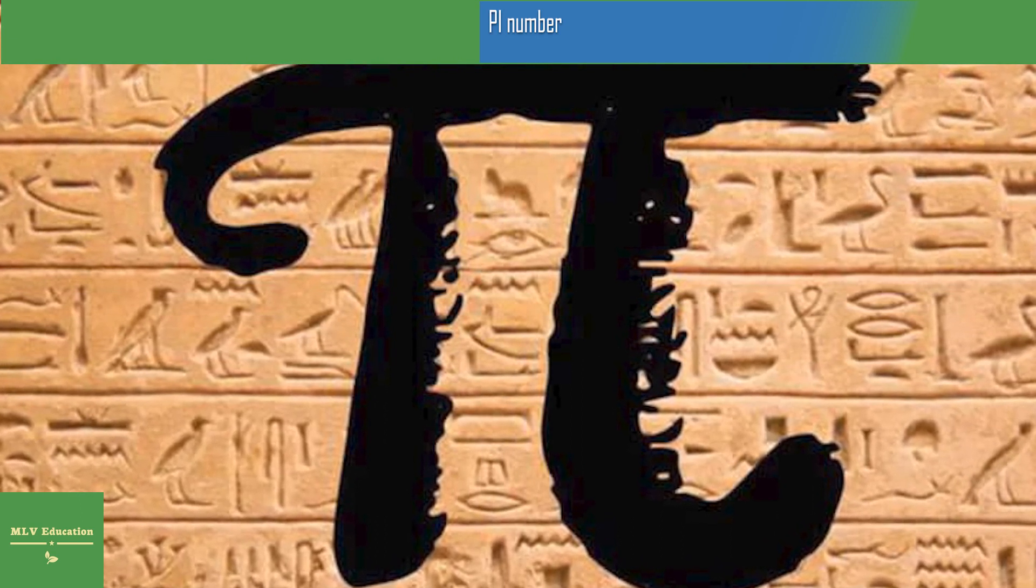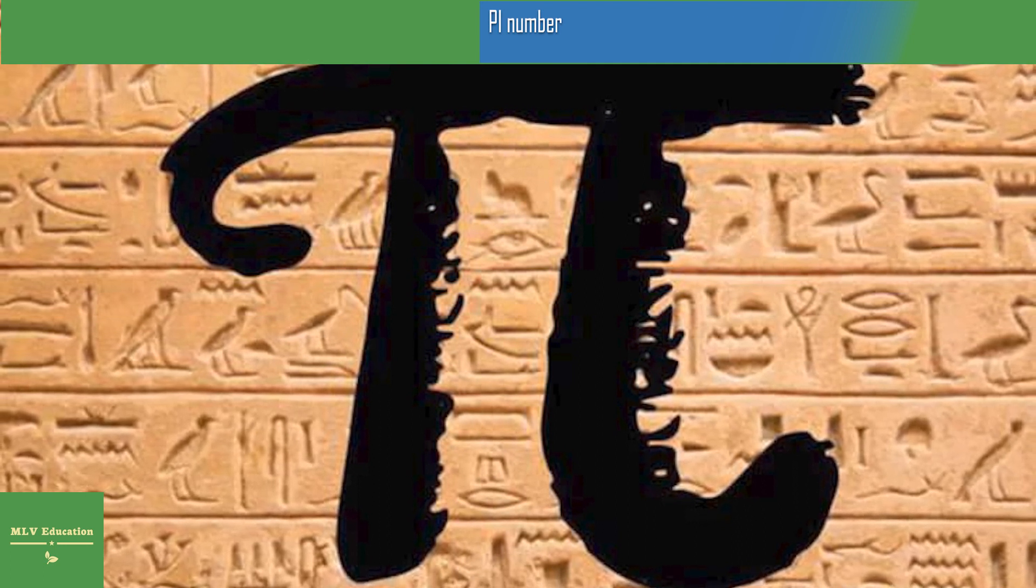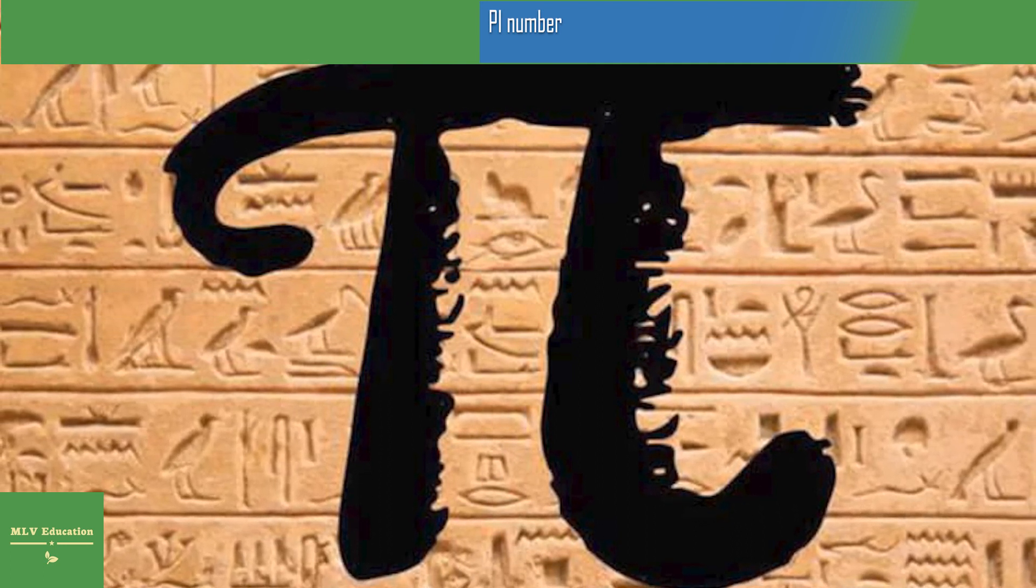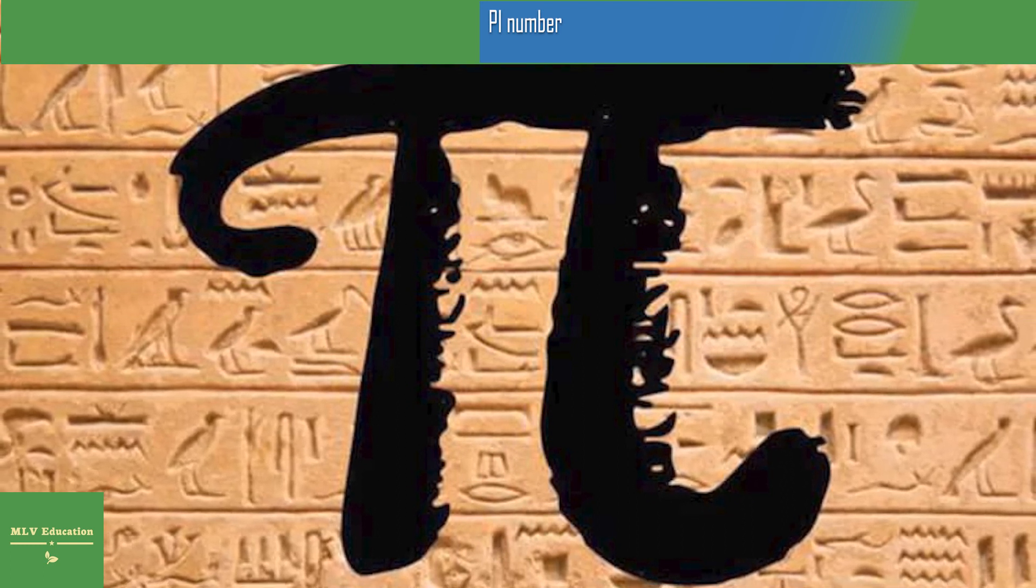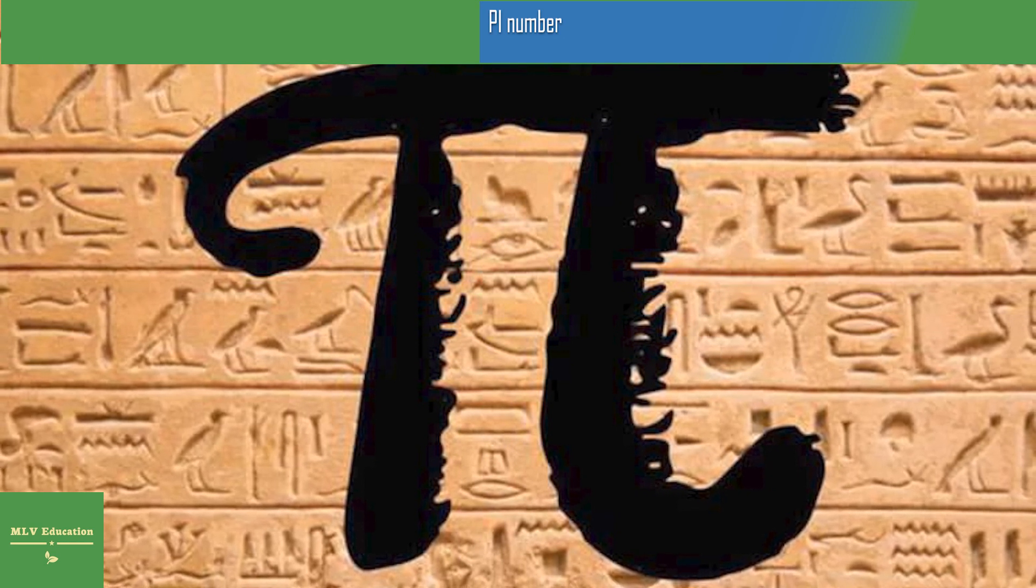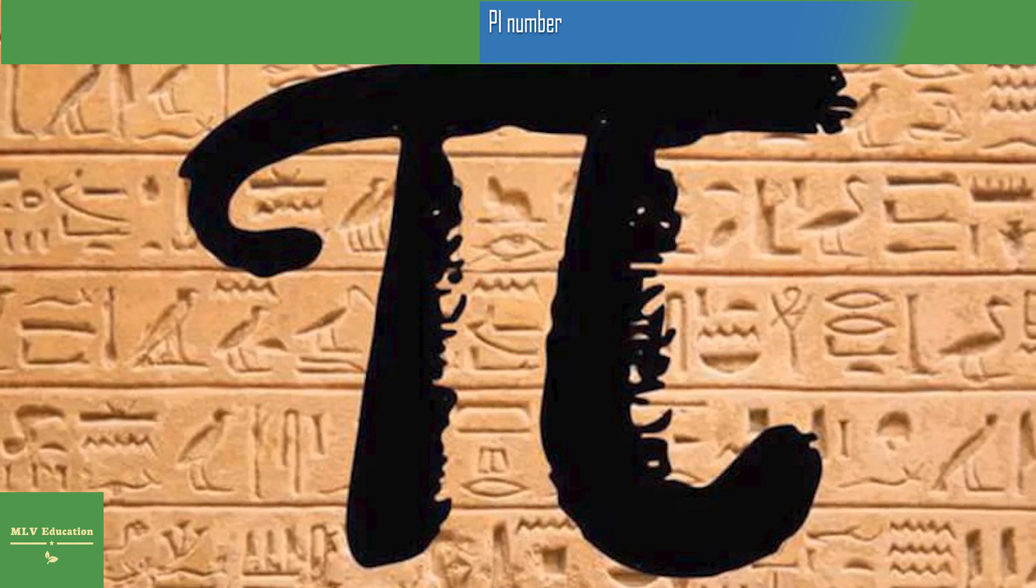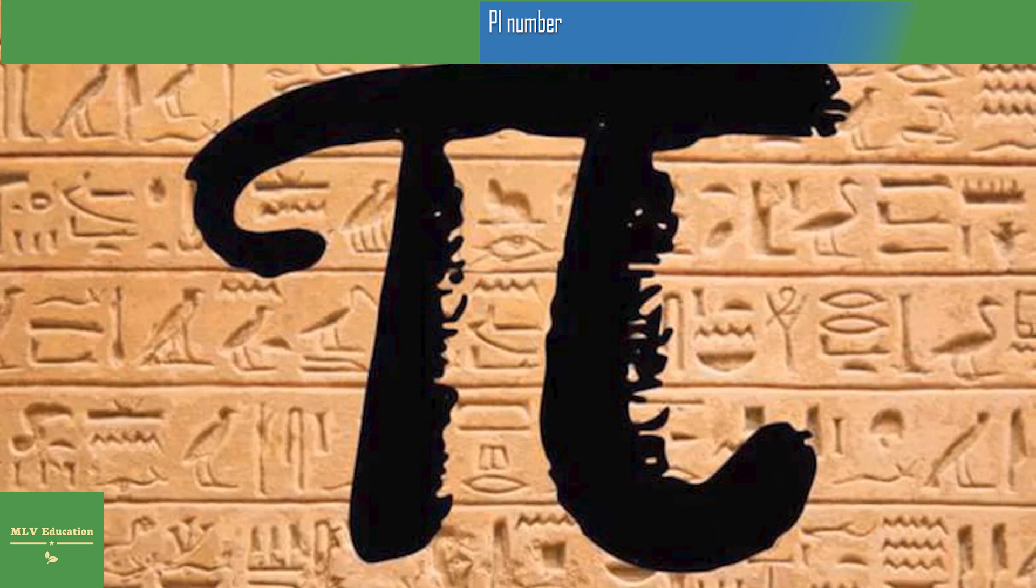In 2004 on March 14th, an autistic young man in Oxford recited in 5 hours, 9 minutes and 24 seconds, 22,514 decimals. A Japanese engineer also managed to say 100,000 decimals by heart in 16 hours. But the record recognized by the Guinness Book is 67,890 decimals said by heart by a Chinese, Lu Chao, in 2009.